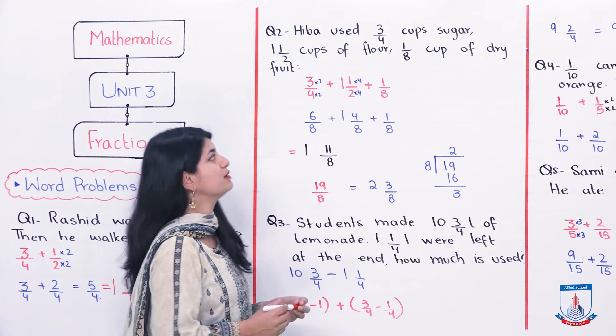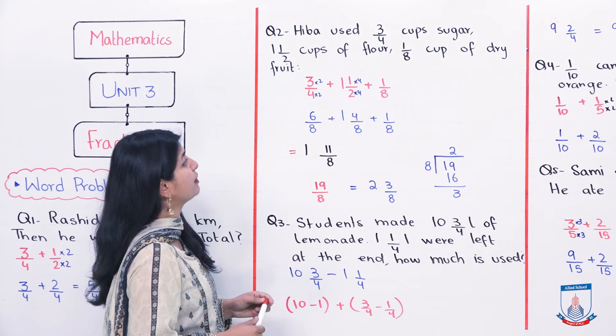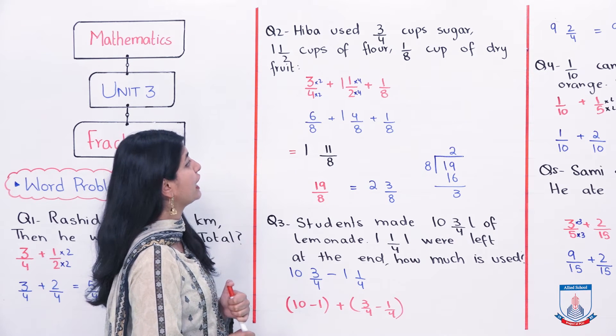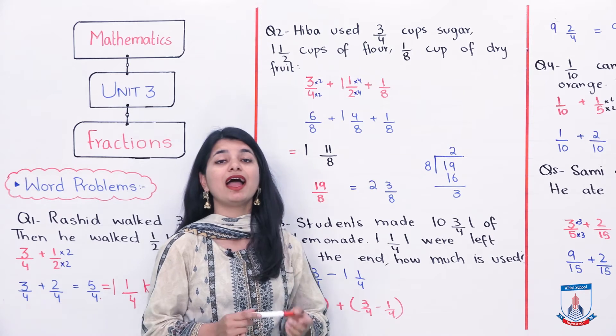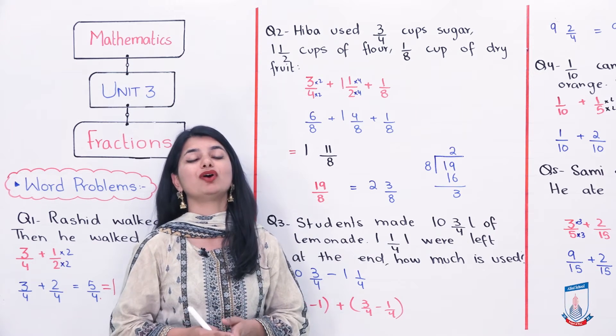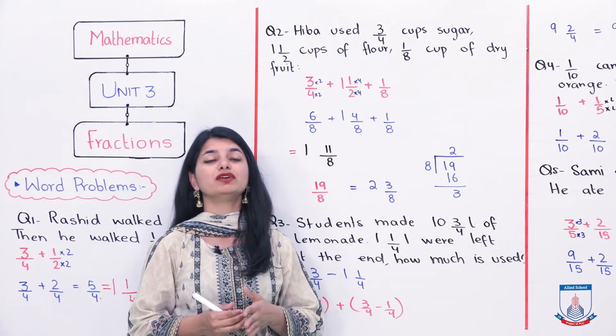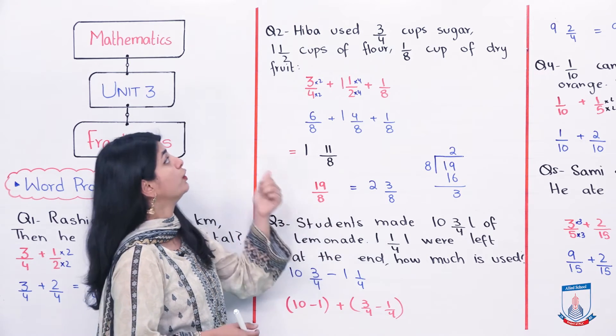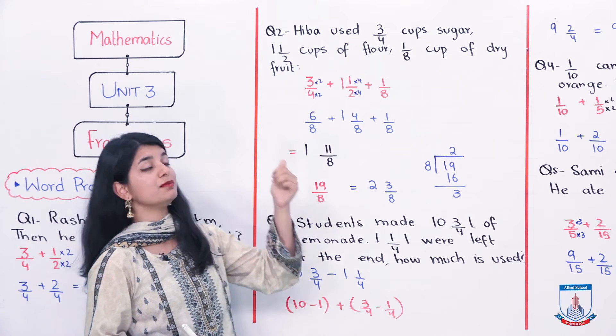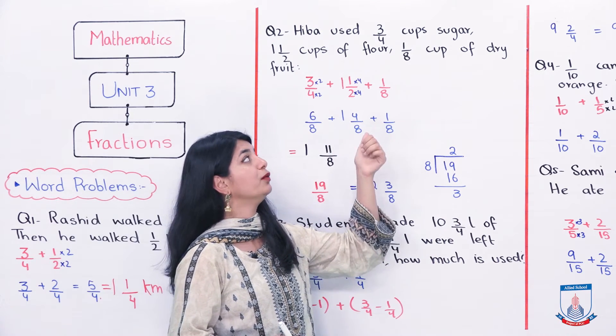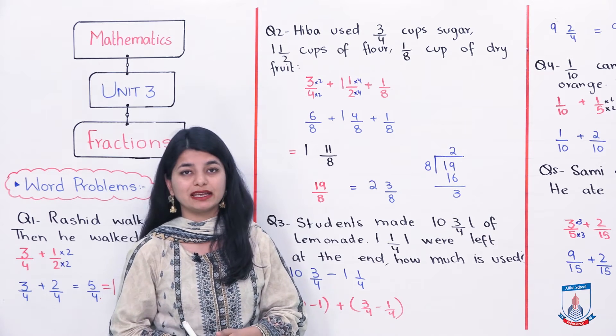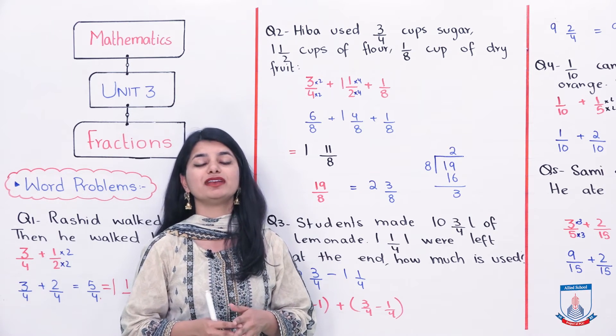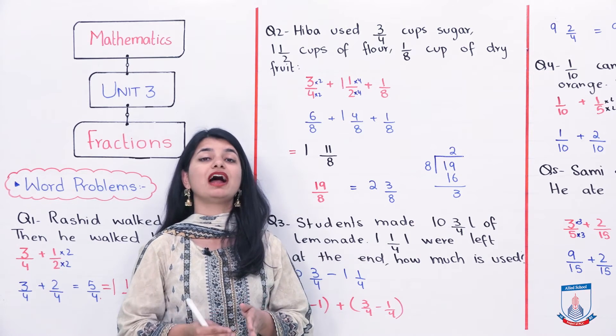Question number 2 is, Hibba used 3 by 4 cups of sugar, 1 whole 1 by 2 cups of flour and 1 over 8 cups of dry fruits for her cake. How many ingredients did she use all together? Now, she has used 3 different things. First, she has used 3 by 4 cups. After that, she has used 1 whole 1 by 2 cups of flour and then used 1 by 8 cups for making cake. So, how many ingredients total? Again, you have to add these.